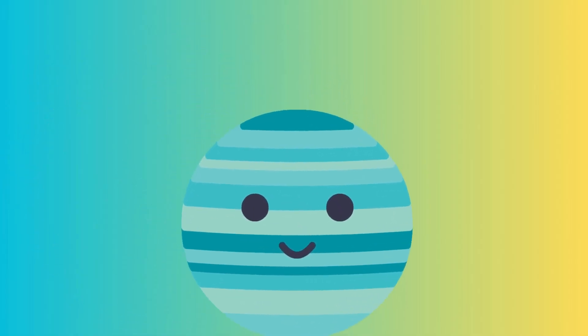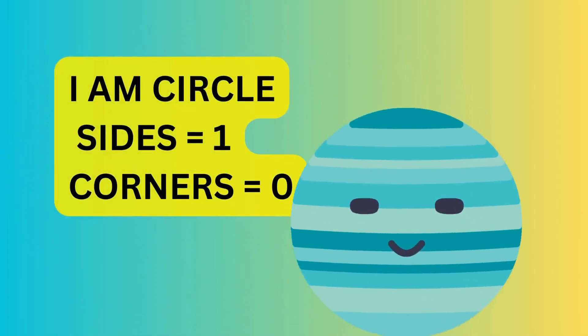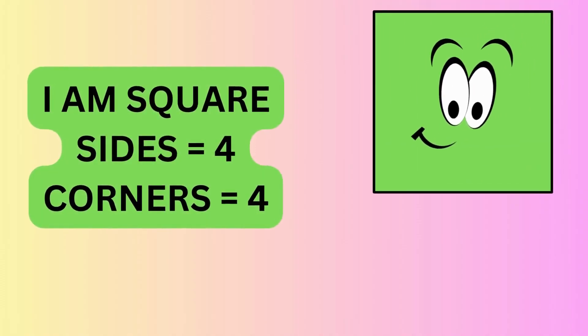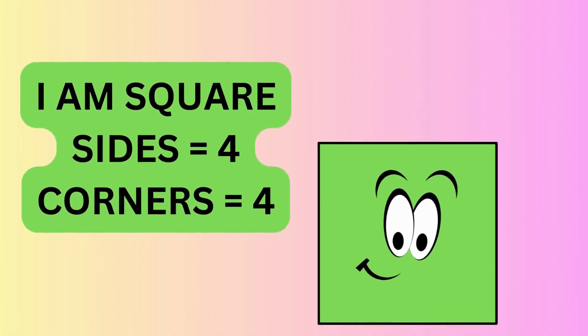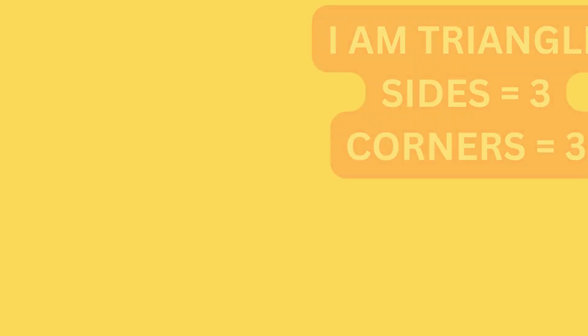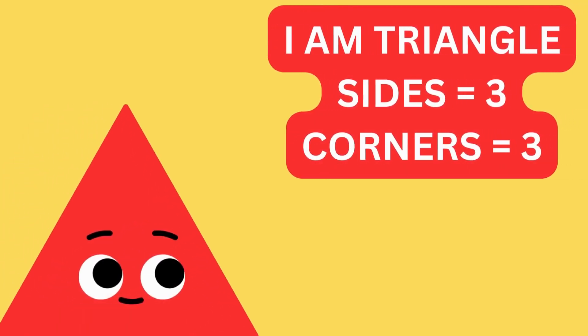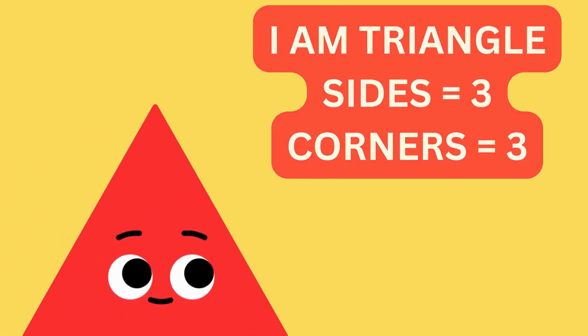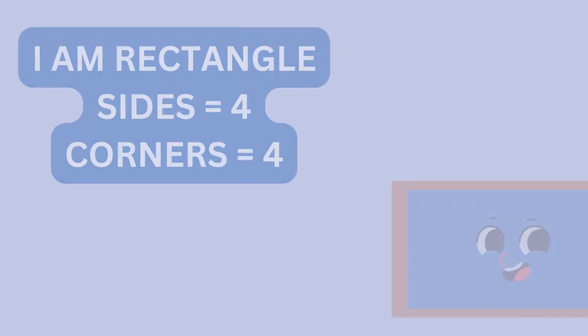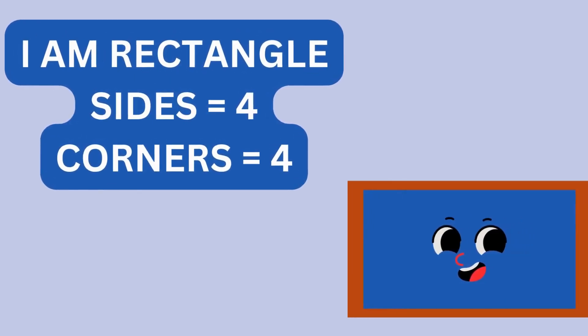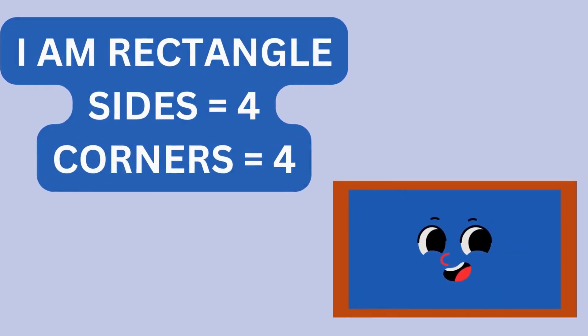I am circle. I have one side and no corners. I am square. I have four sides and four corners. I am triangle. I have three sides and three corners. I am rectangle. I have four sides and four corners.